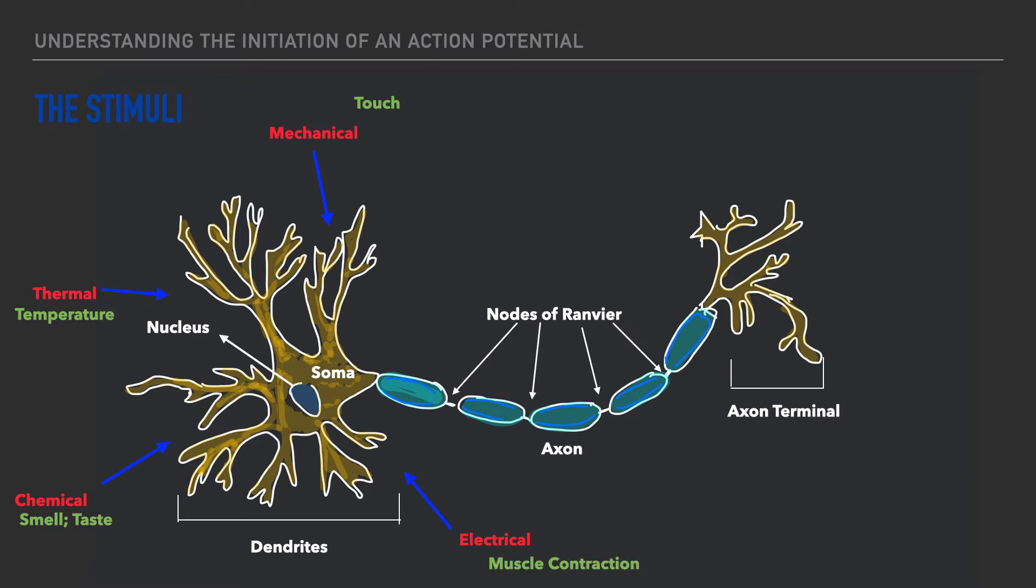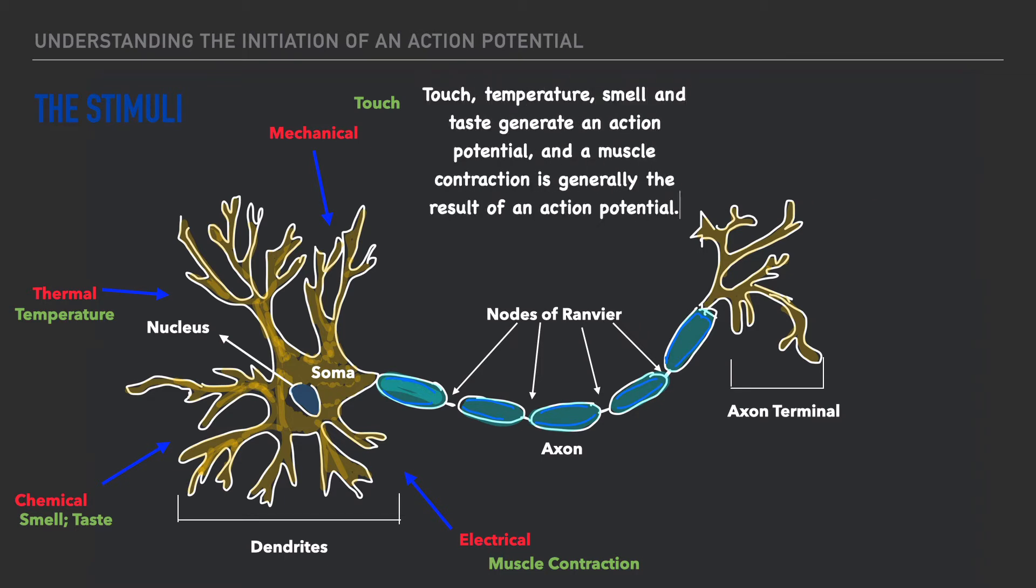So in summary things such as touch, temperature, smell, and taste generate an action potential and a muscle contraction is generally the result of an action potential.